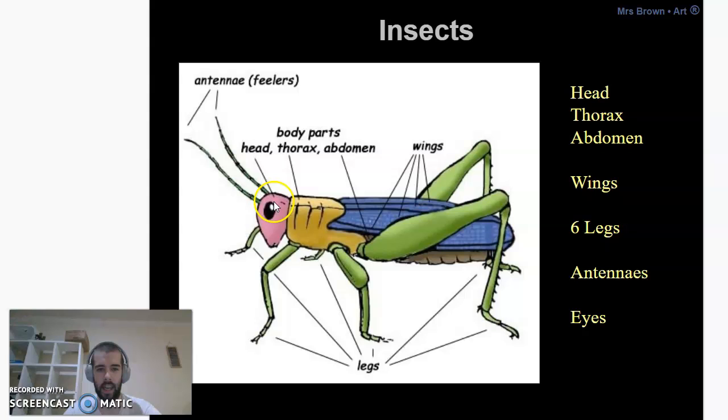Bugs have antennae, a head, a thorax, an abdomen, and often they have wings and six legs. Not all bugs have wings, so if you choose a bug without wings, don't worry.